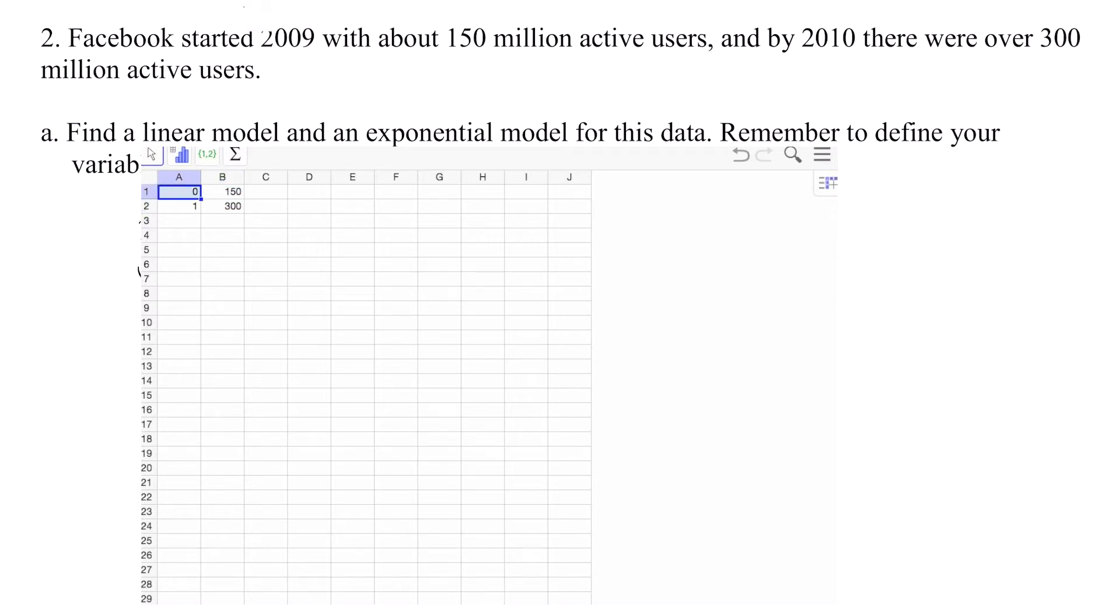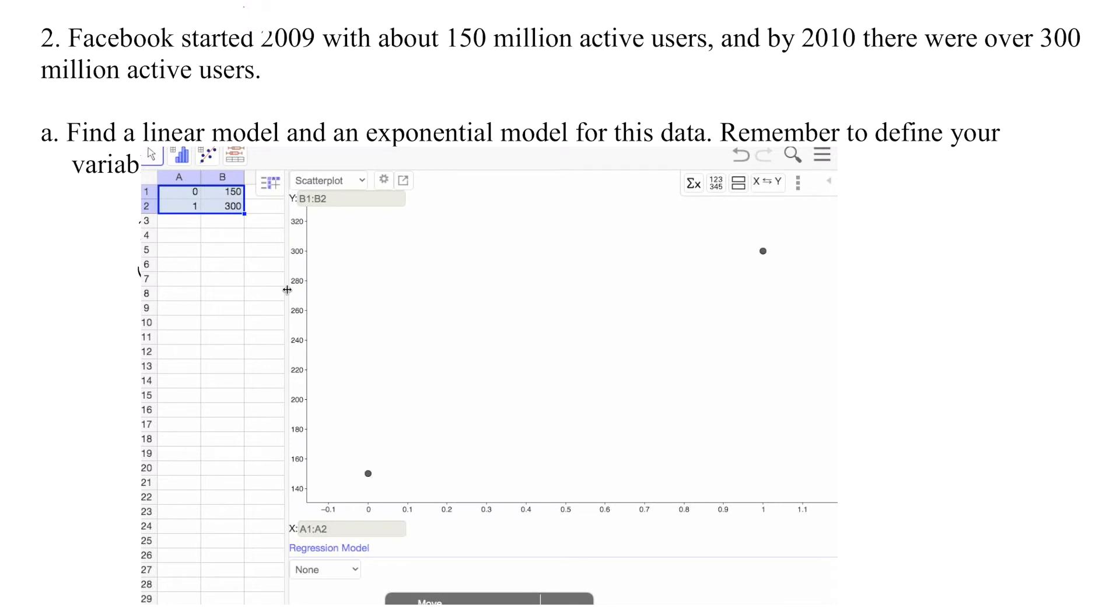In 2010, that's one year since 2009, Facebook had 300 million active users. Now let's go back to GeoGebra. Column A is going to represent our independent variable, so I'm going to type in zero, then one. Column B is our dependent variable, so 150, like our table, and 300. I'm going to select all this and click on this bar graph here and go to Two Variable Regression Analysis.